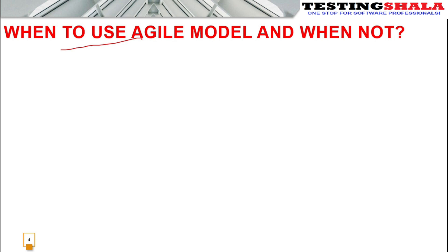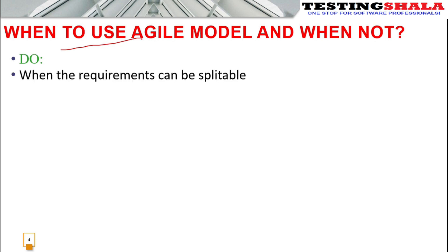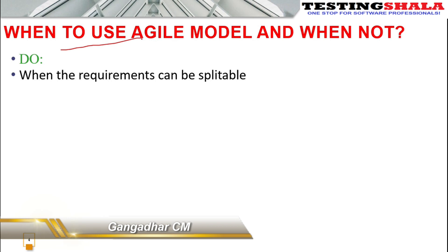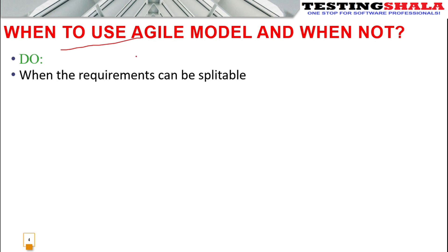Most companies have already moved from the waterfall model to agile, and they want to understand the basic concepts — why we need agile and which kinds of projects don't use it. When to use agile: first, when requirements can be broken down and split into smaller pieces, those kinds of projects can make use of agile methodologies.